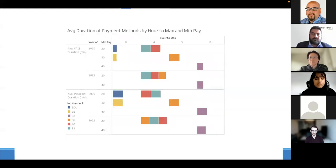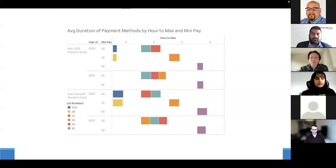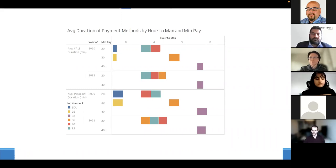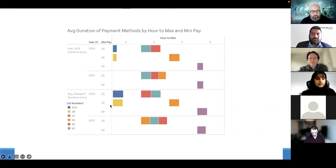Looking at average duration by hour and minimum payment: lots 1DU and 2B have no hour of maximum, indicated by zero. Data is available only for 2020 for both app and terminal users. Terminal users typically have shorter durations than app users, with the top around 120 minutes and the bottom around 300 minutes for the Dundas area lots.